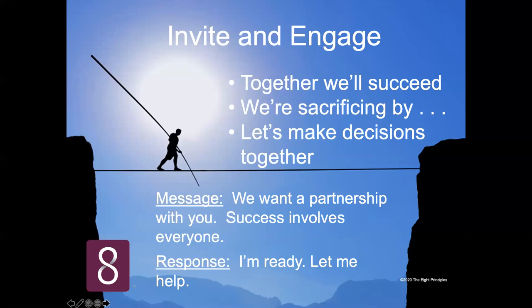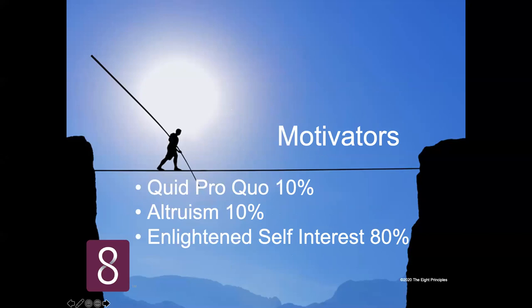What motivates people to make gifts? There are about twenty top motivators, but they fall into three categories. Quid pro quo — something for something — is about 10%. Pure altruism — 'I give because it's the right thing to do' — is about 10%. But enlightened self-interest is 80%. That means something that benefits the community but is in line with the donor's own values and vision. Remember that as you reach out to people during this black swan event.